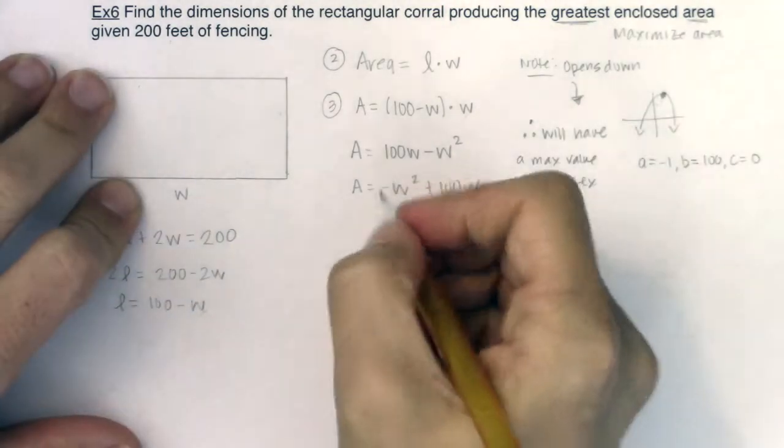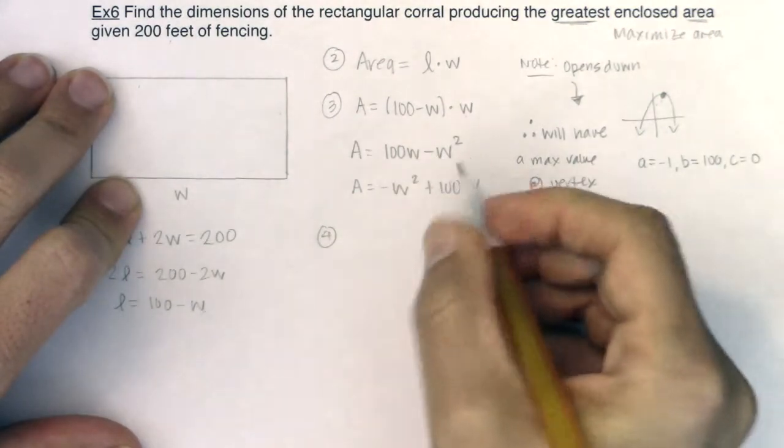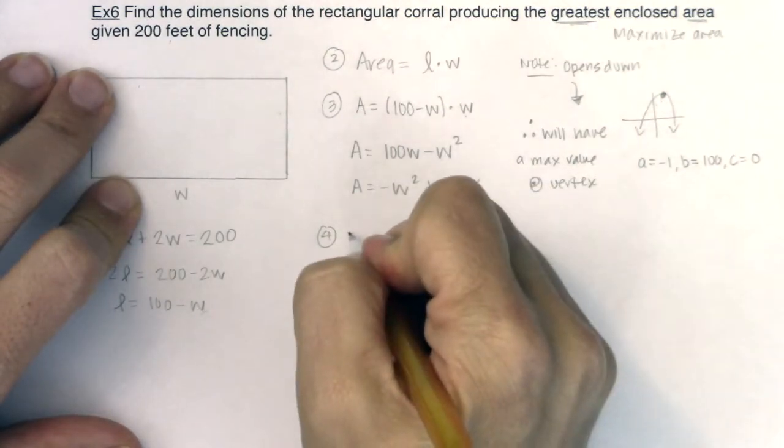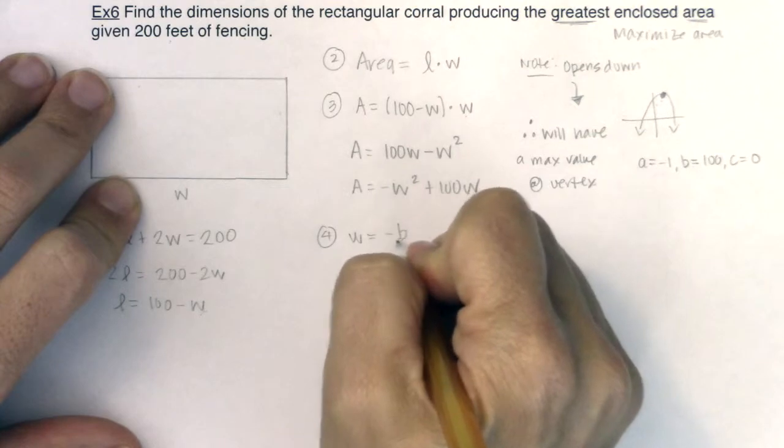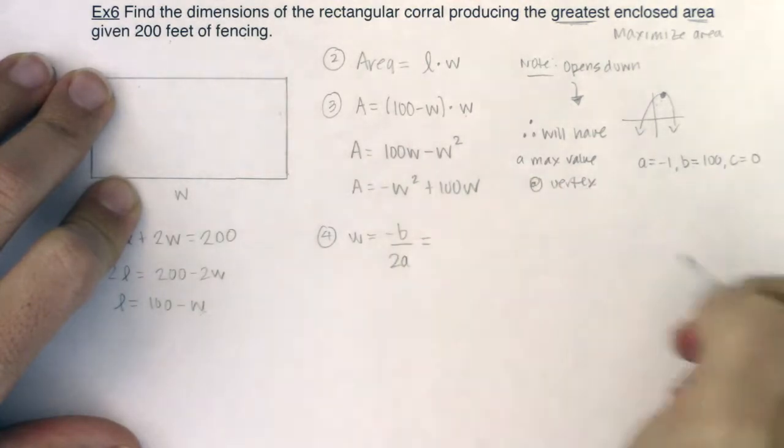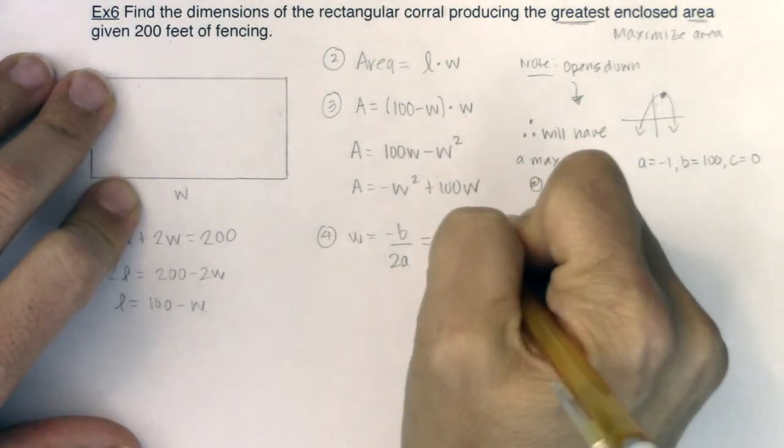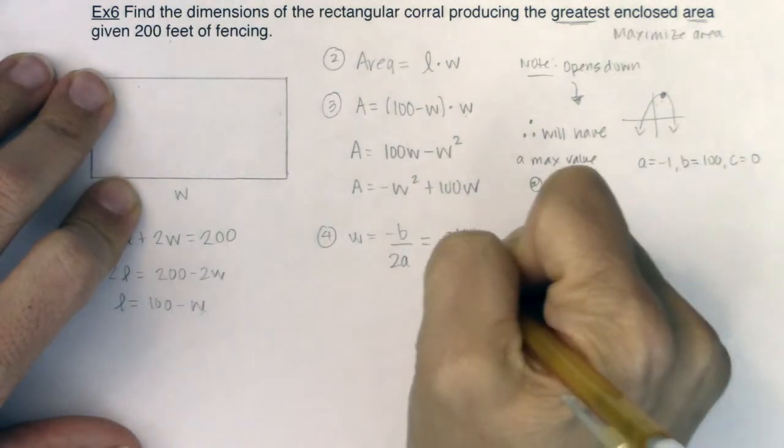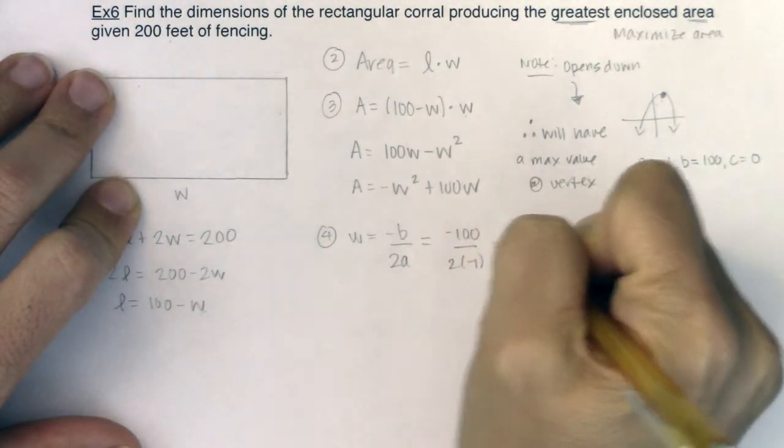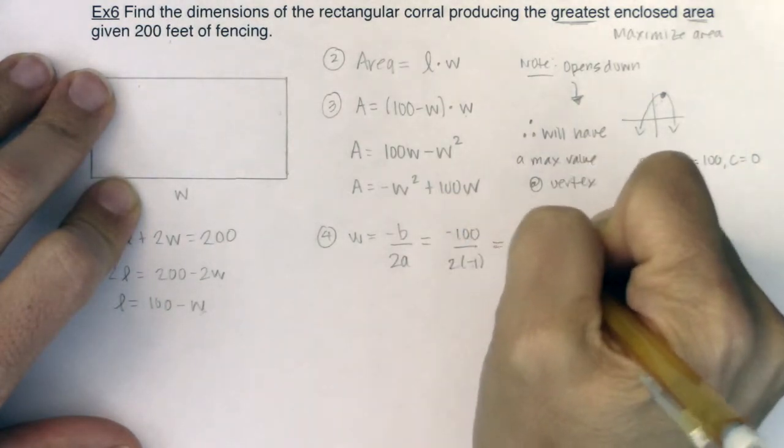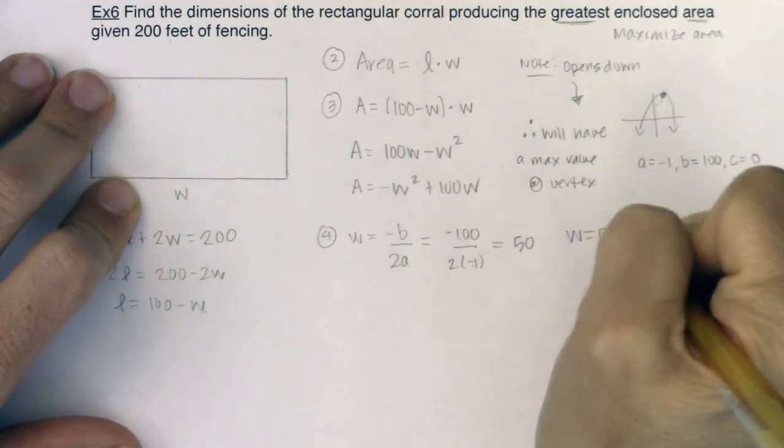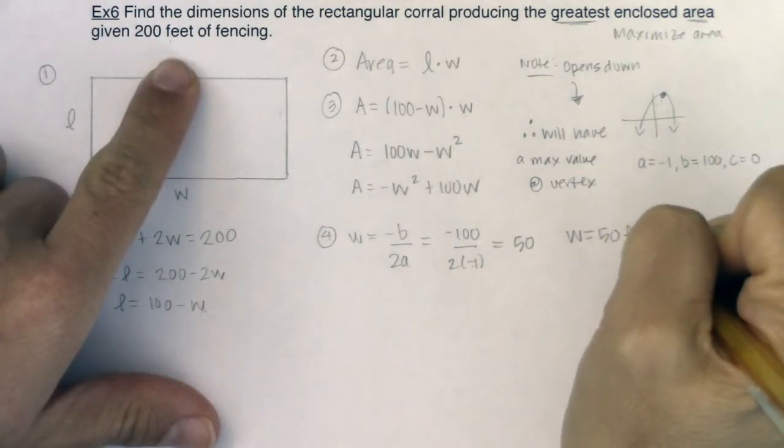So if I want to find this vertex, I'm not using X anymore, I'm using W. So W will equal negative B over 2A. In this case, that will be negative 100 over 2 times negative 1, which would be positive 50. So I know the width is going to equal 50, and it looks like the units are feet.